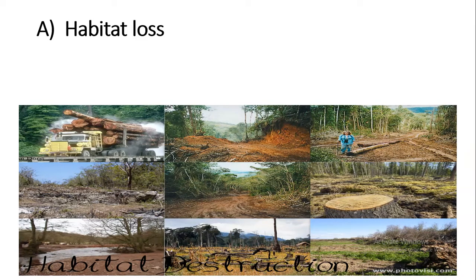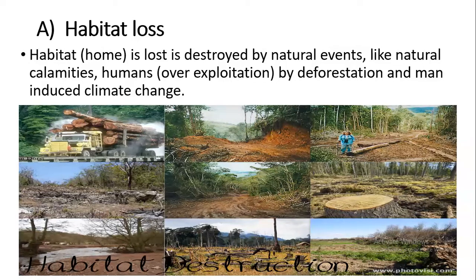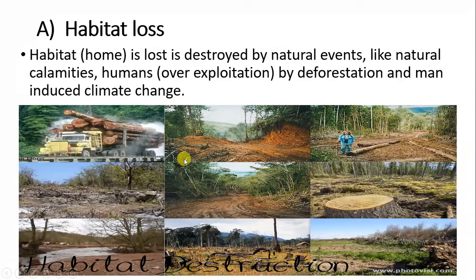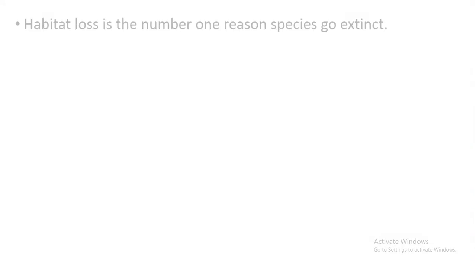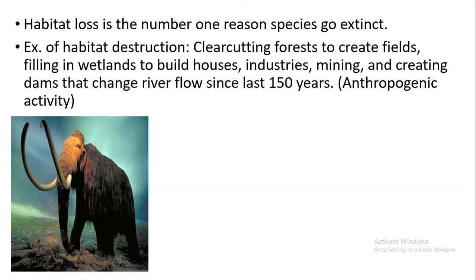The very first topic is habitat loss. You can see in this picture how the habitat of animals is getting destroyed. The very first reason for destruction of habitat is natural calamities, and the next major reason is human activities. Humans are exploiting the forest area through deforestation, which is causing major climatic change. Habitat loss is the main reason due to which animals are getting extinct.